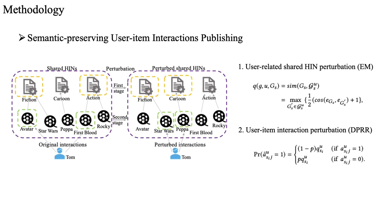The second stage perturbs user-item interactions within each selected shared HIN in a degree-preserving manner, which avoids introducing more noise and enhances interaction diversity. We also provide rigorous privacy guarantees for this publishing process.